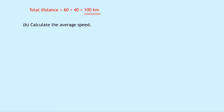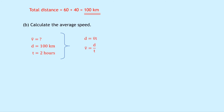Part B says to calculate the average speed. Writing down what we know: we're trying to find average speed, the distance is 100 kilometres, and our time is two hours for the journey — one hour east and one hour south. Writing down our equation d equals v-bar t, rearranging for v-bar we get d over t, and substituting in the numbers gives us 100 over 2, which gives a final answer of 50 kilometres per hour.